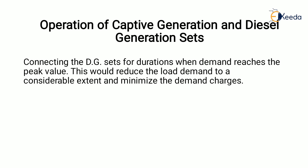Next is the operation of captive generation and diesel generation sets. Connecting DG sets — that is, diesel generation sets — for the duration when demand reaches the peak value would reduce the load demand to a considerable extent and minimize demand charges.